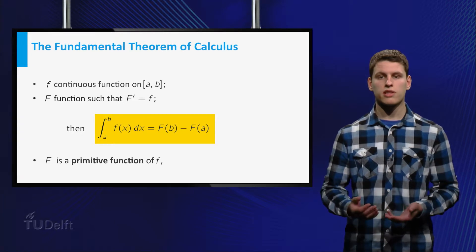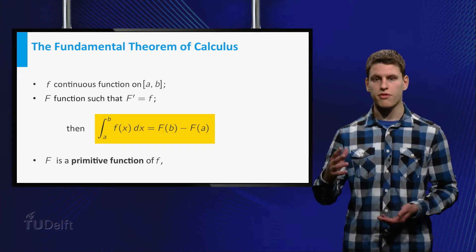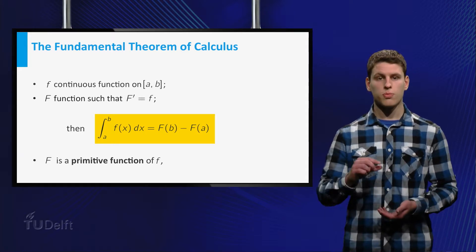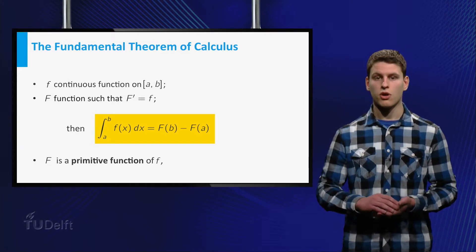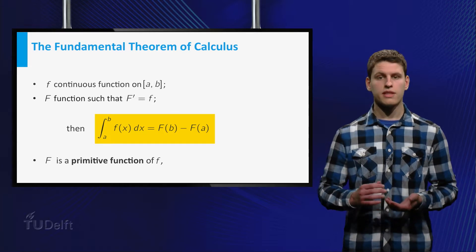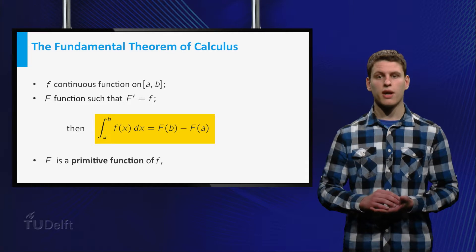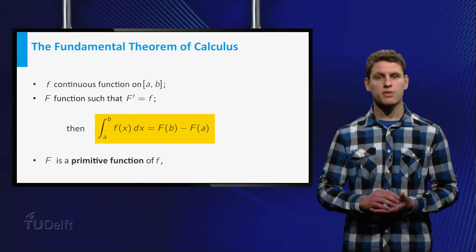This theorem tells us that if we have a continuous function f on an interval from a to b, and we know that small f is a derivative function of capital F, then the integral from a to b of small f equals capital F in b minus capital F in a.